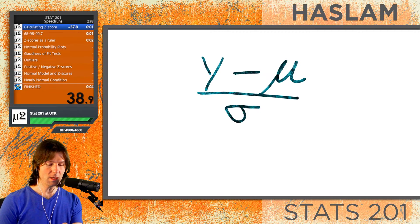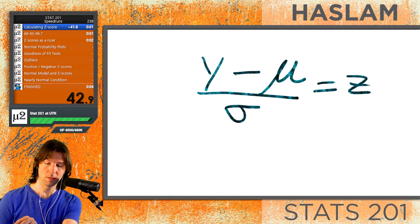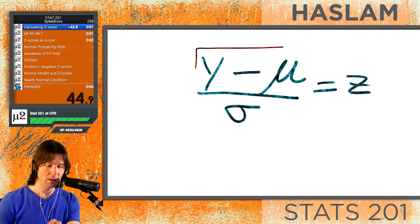So when you think about a z-score, all we're doing is taking a difference and then standardizing that difference.